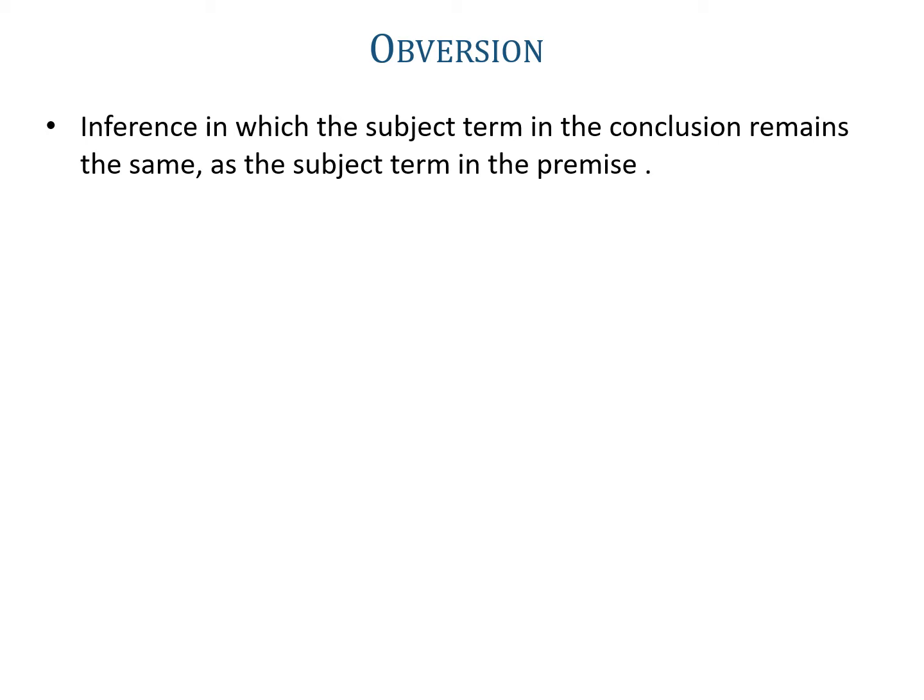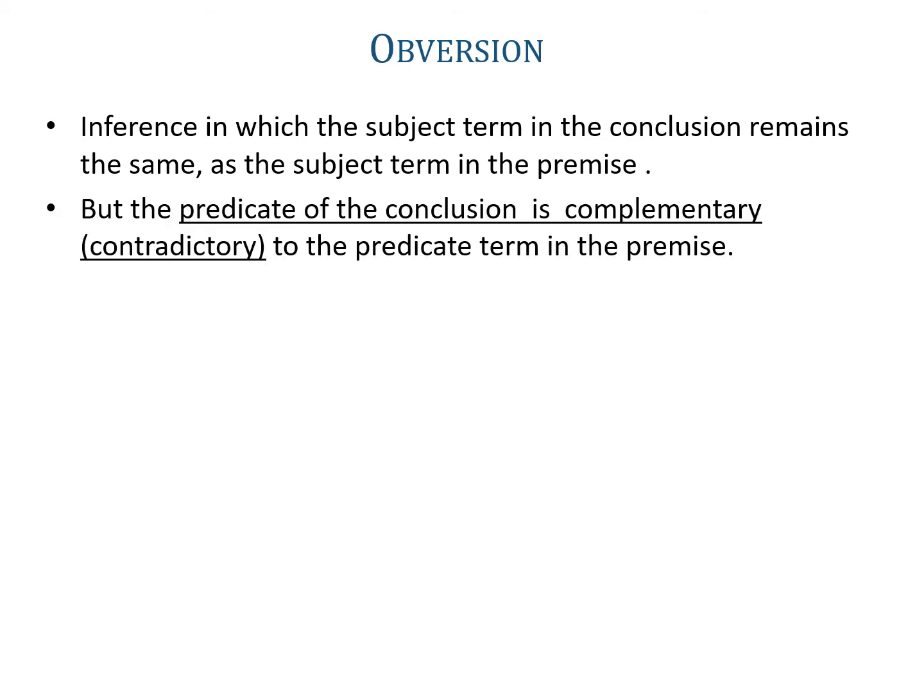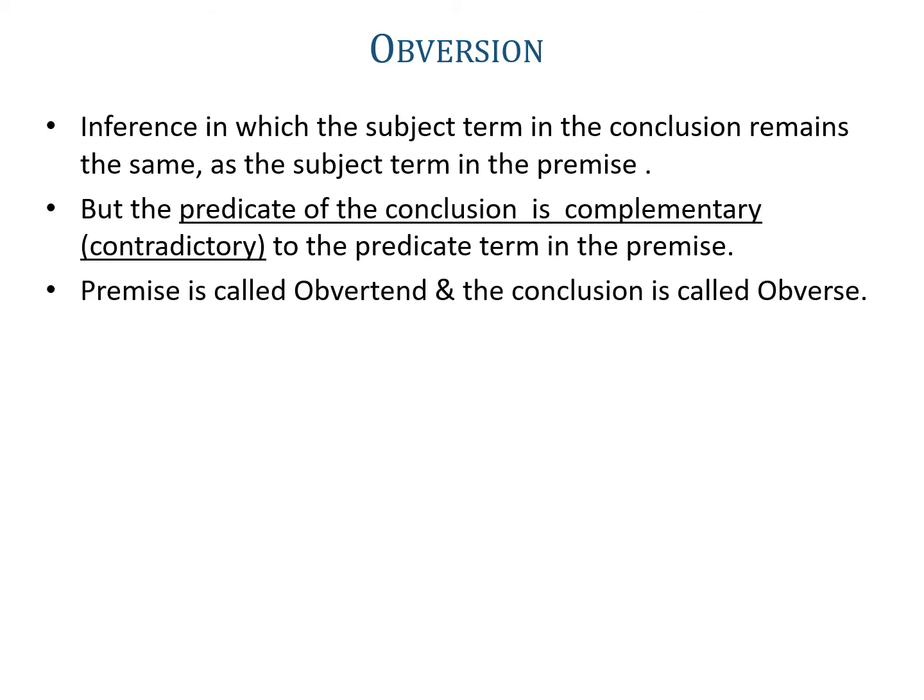What is obversion? Obversion is an inference in which the subject term in the conclusion remains the same as the subject term in the premise. But the predicate of the conclusion is complementary, that is contradictory, to the predicate term in the premise. The premise is called the obvertend and the conclusion is called the obverse.